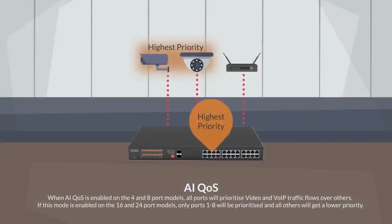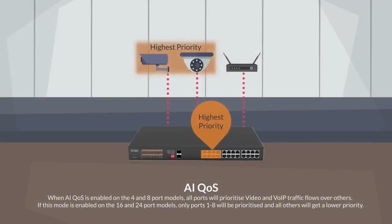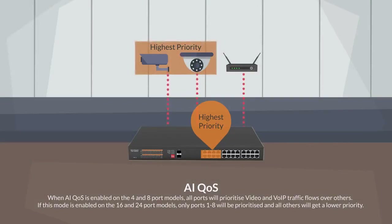When AI QoS is enabled on the 4 and 8 port models, all ports will prioritize video and VoIP traffic flows over others. If this mode is enabled on the 16 and 24 port models, only ports 1 to 8 will be prioritized and all others will get a lower priority.